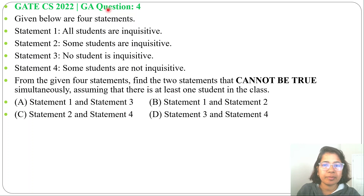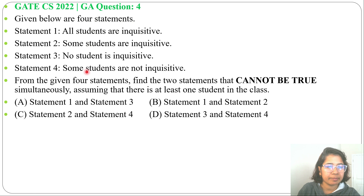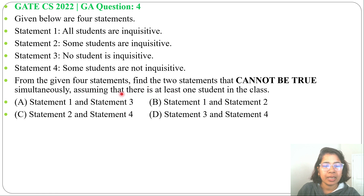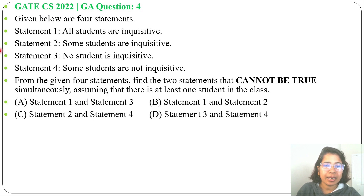Let's solve one previous question of general aptitude. This question was asked in GATE CH 2022, GA question number 4. Given below are 4 statements. From the given 4 statements, find the 2 statements that cannot be true simultaneously, assuming that there is at least 1 student in the class. And 4 options are given. Let's analyze one by one.